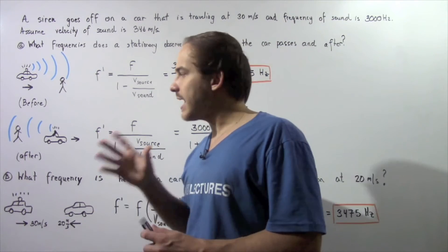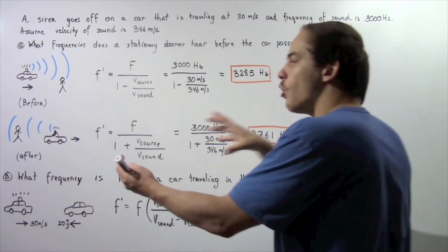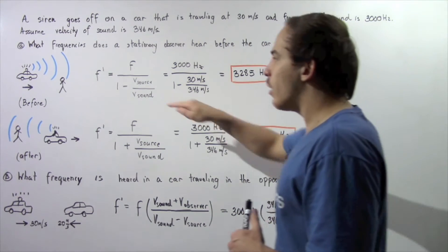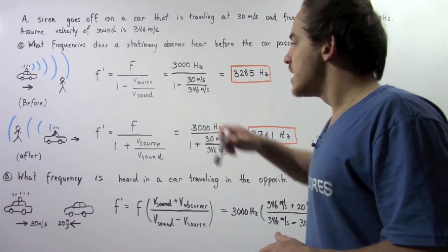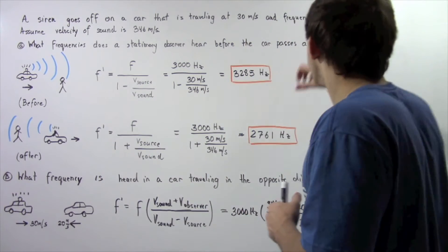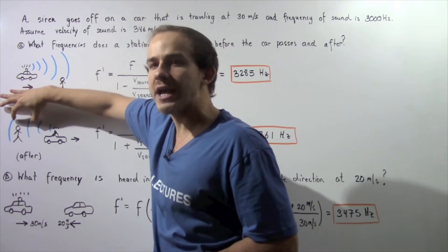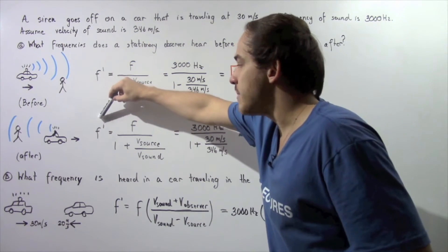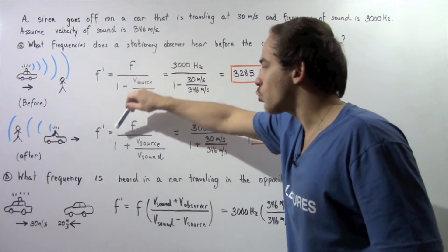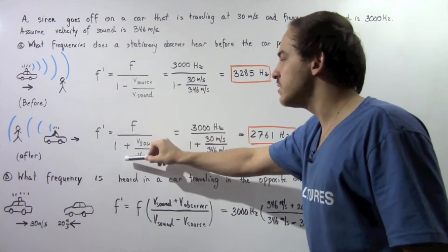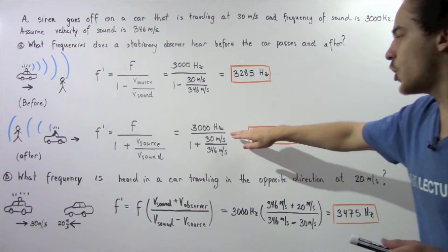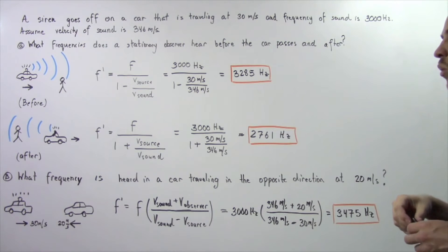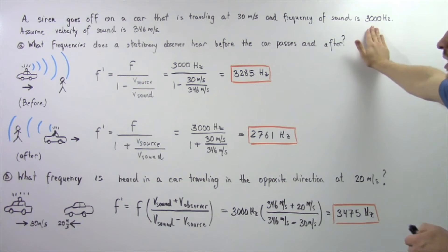Now let's look at case two: the car is traveling away from the stationary observer. Instead of a negative sign, we use a positive sign, so our new frequency will be less than before because the wavelength is greater. F prime equals 3000 hertz divided by 1 plus 30 divided by 346. The units cancel and we get approximately 2761 hertz, which is less than 3000.